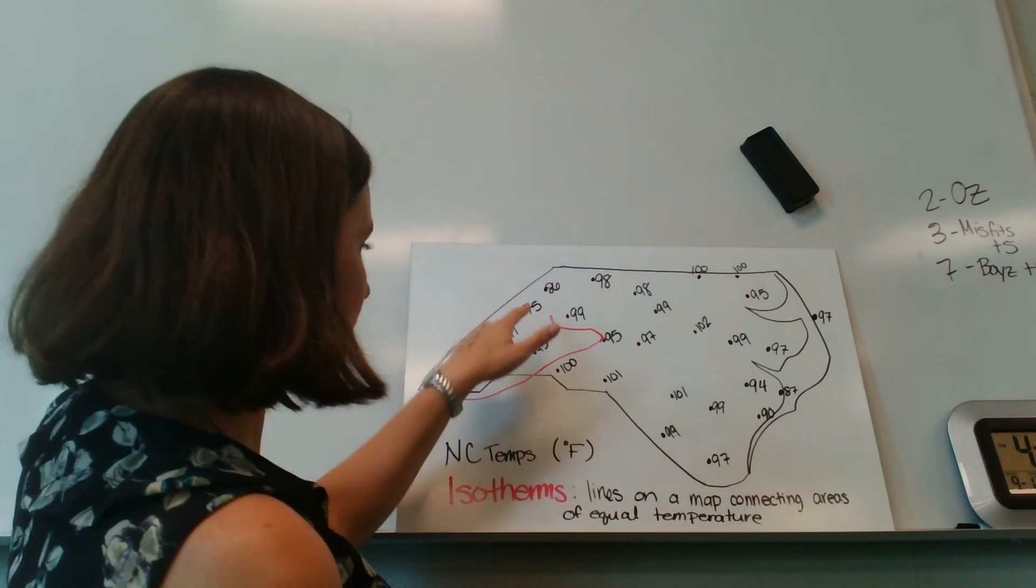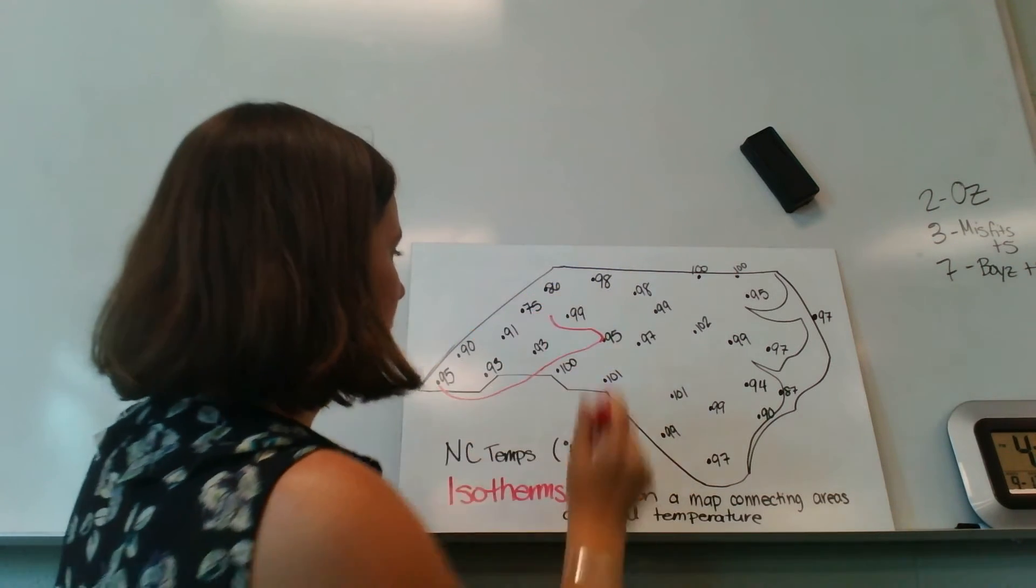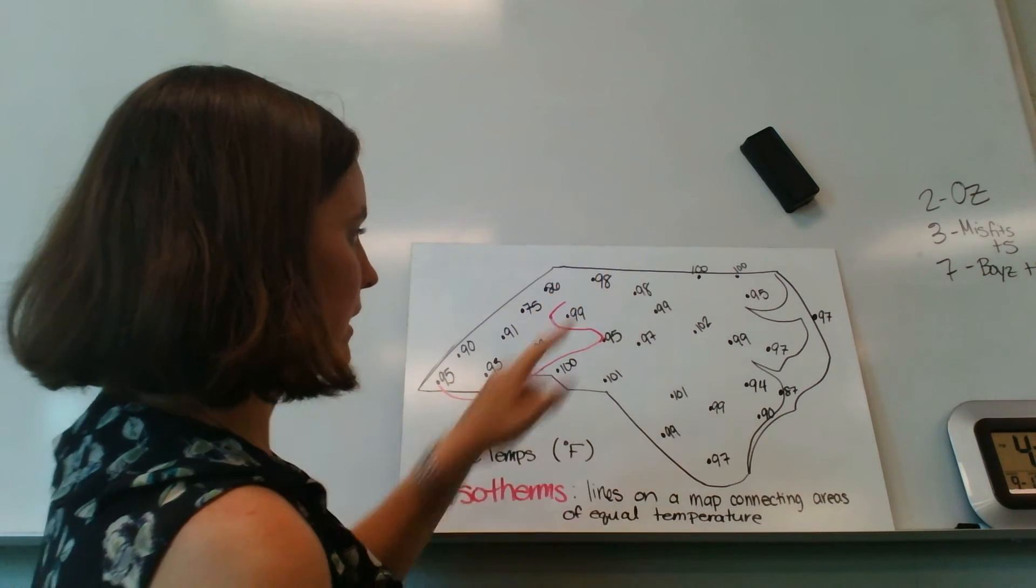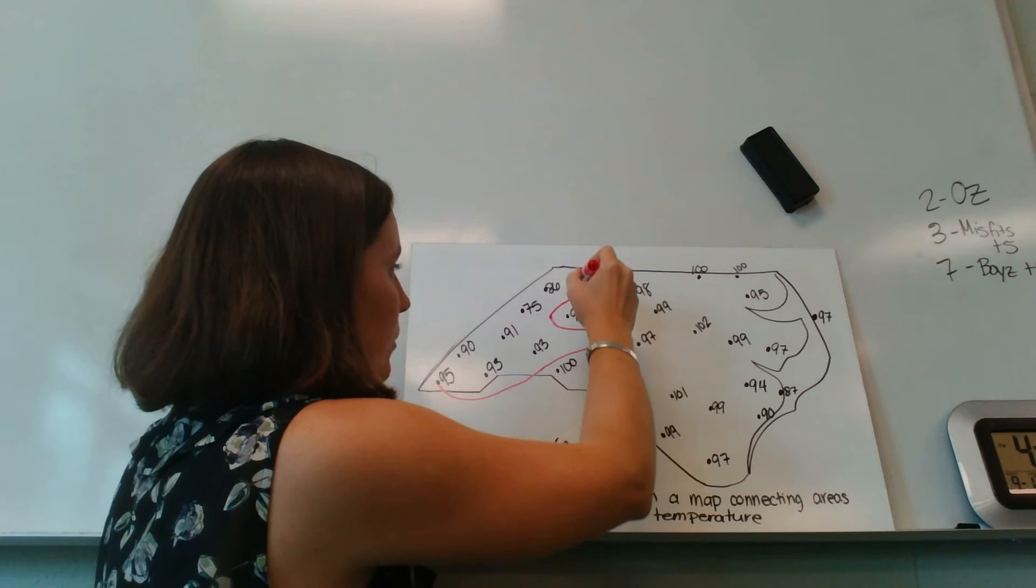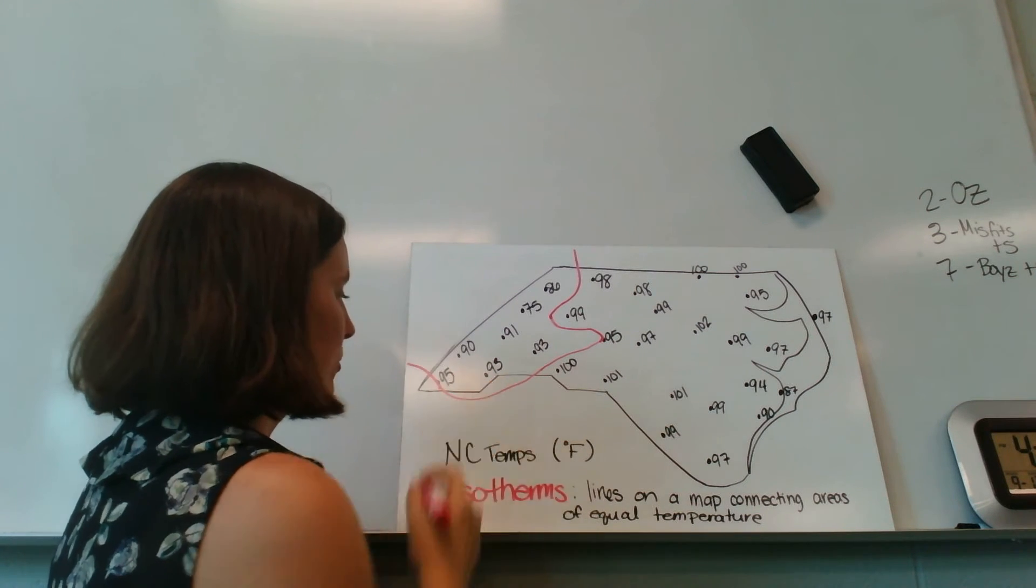And then I know that 95 is between 75 and 99, so I can go between them. 95 is also between 86 and 89, so I can go between there. So I have a 95 degree isotherm.